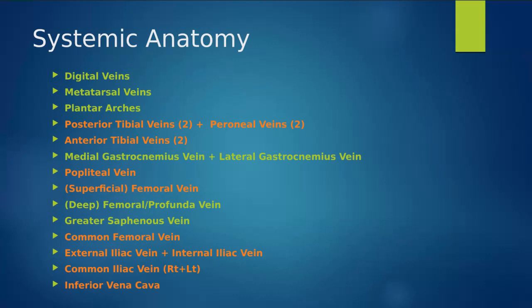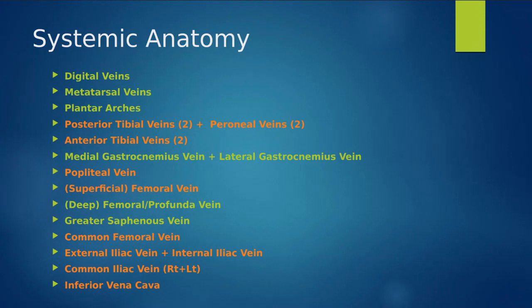Looking at the overall systemic anatomy of the venous system — I have certain veins highlighted in green and certain veins in orange. The green are our superficial system and the orange are our deep system. Some of these veins are a little controversial in different literature, and you may have different radiologists and different protocols regarding some of the calf veins.